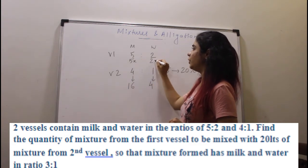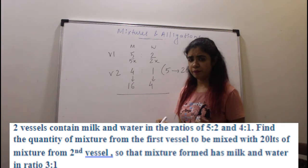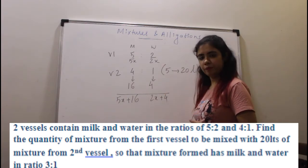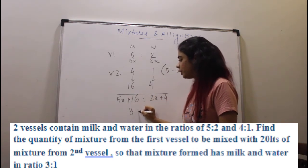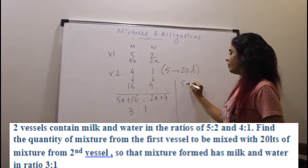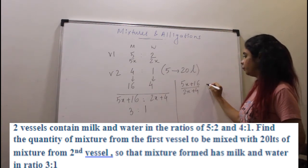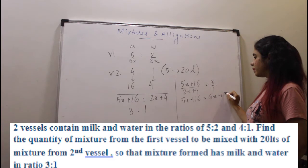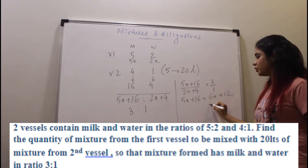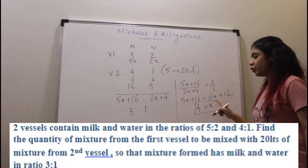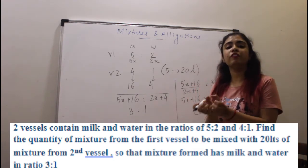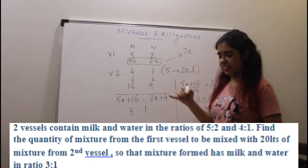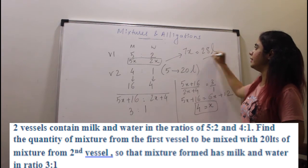Say you withdraw 5x milk and 2x water from the first vessel. Total milk = 5x + 16 and total water = 2x + 4. This ratio should equal 3 to 1. So (5x + 16) / (2x + 4) = 3. Cross multiplying: 5x + 16 = 6x + 12, so x = 4. From the first vessel you are withdrawing 5x + 2x = 7x total. With x = 4, that is 28 litres. That's your answer.